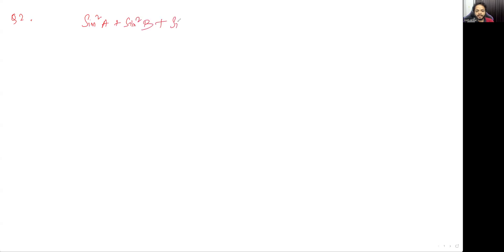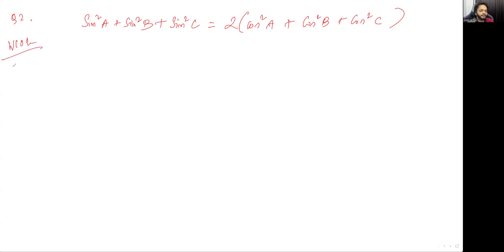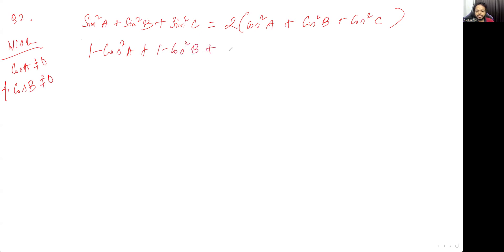The equation is: sin²A + sin²B + sin²C = 2(cos²A + cos²B + cos²C). I'll now convert everything into cosines using sin²x = 1 - cos²x, so the left side becomes (1 - cos²A) + (1 - cos²B) + (1 - cos²C).